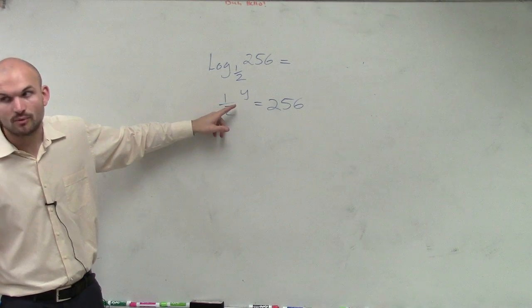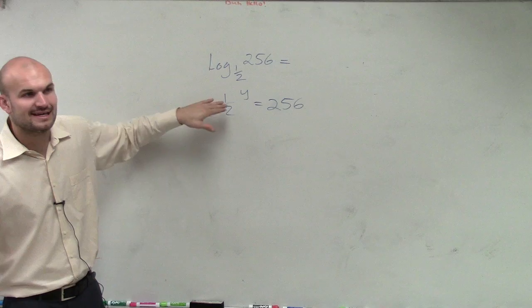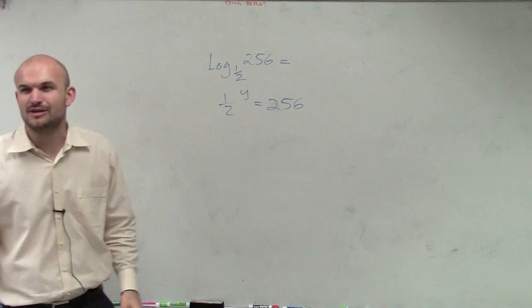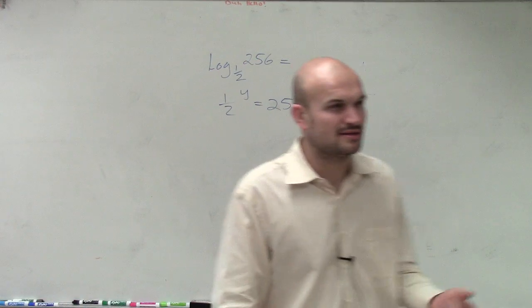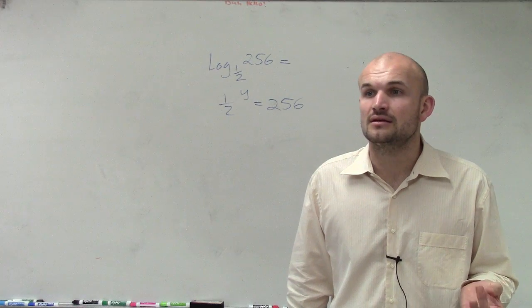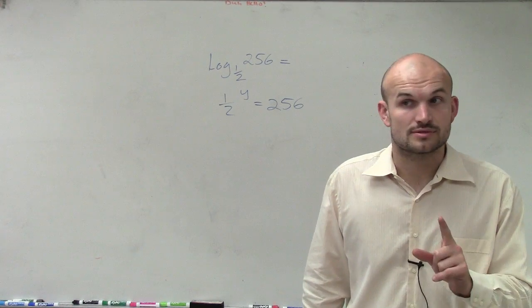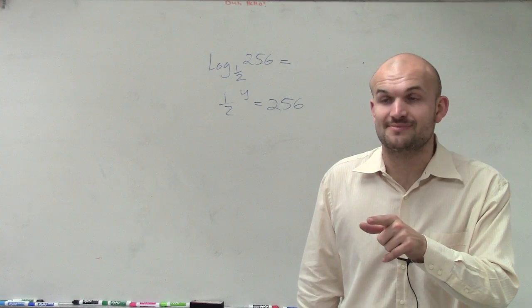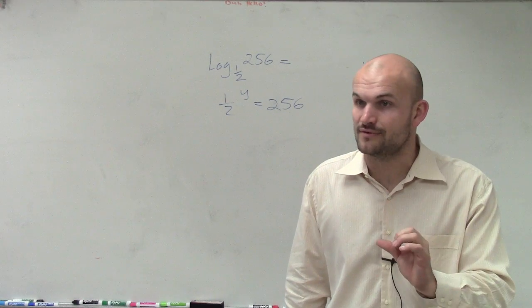1/2 squared is going to be 1/4, right? So I need this to become a whole number. Does anybody know what I'll have to include as my exponent? Some kind of special type of number. Yes? Close, but one thing you said has to be the key clue: it has to be negative, right?